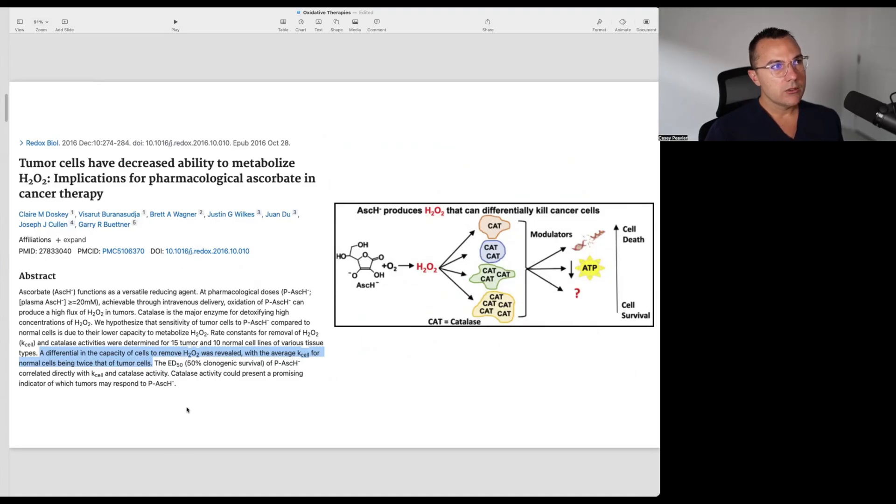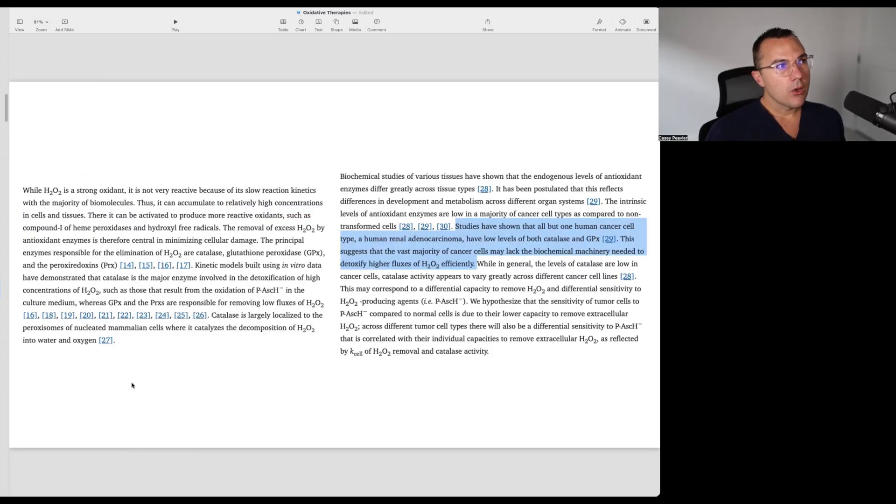So this paper was published in December of 2016, and it's titled tumor cells have decreased ability to metabolize hydrogen peroxide, implications for pharmacologic ascorbate in cancer therapy. So it's been found that there is a differential concentration of catalase within cancer and normal cells. And it says here a differential in the capacity of cancer cells to remove hydrogen peroxide was revealed. And the average K cell for normal cells being twice that of a tumor cell. It says here, while hydrogen peroxide is a strong oxidant, it is not very reactive because of a slow reaction kinetics with the majority of biomolecules. Thus, it can accumulate to relatively high concentrations in cells and tissues. There, it can be activated to produce more reactive oxygen, such as compound I of heme peroxidases and hydroxyl free radicals.